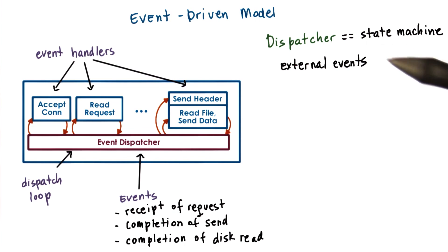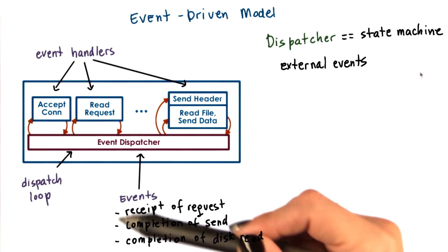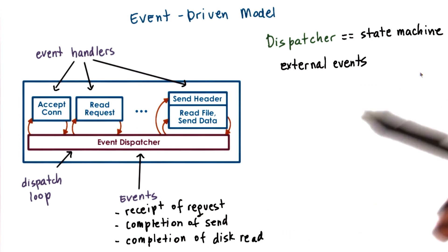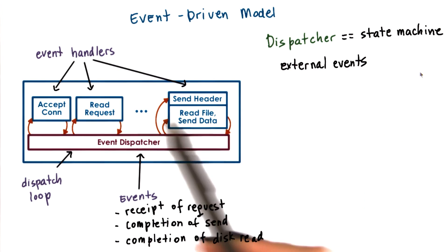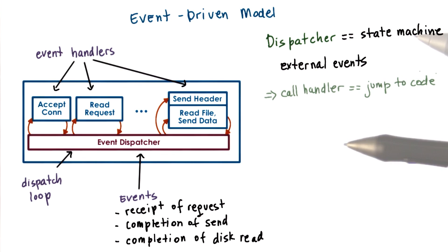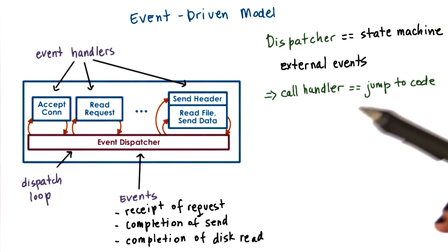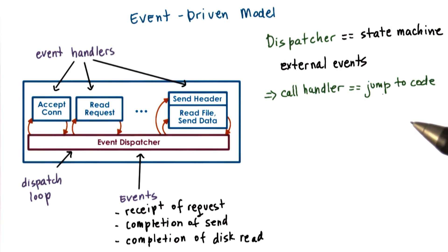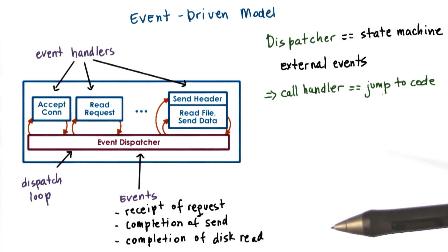The dispatcher has the ability to accept any of these types of notifications, and then based on the notification type, to invoke the appropriate handler. In that sense, it operates very much like a state machine. Since we're talking about a single-threaded process, invoking a handler simply means jumping to the appropriate location in the process's address space where the handler is implemented.